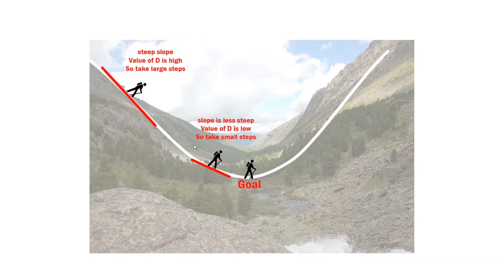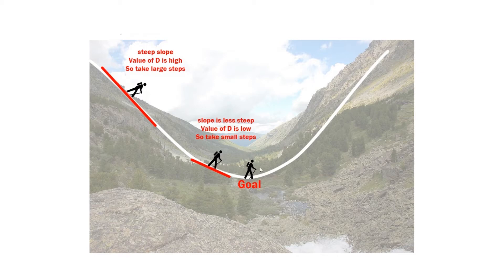To understand gradient descent better, imagine a valley and a person with no sense of direction who wants to get to the bottom of the valley. He goes down the slope and takes large steps when the slope is steep and small steps when the slope is less steep. He decides his next position based on his current position and stops when he reaches the bottom of the valley, which is his goal. Let's apply gradient descent step by step.